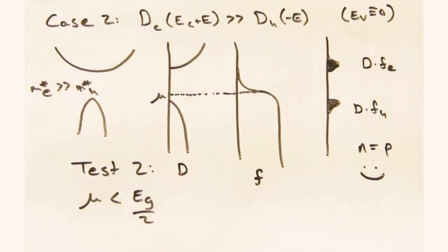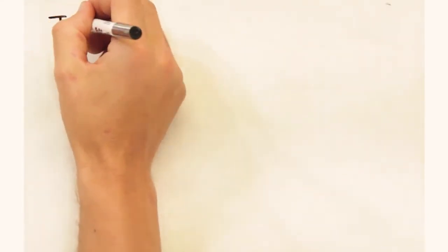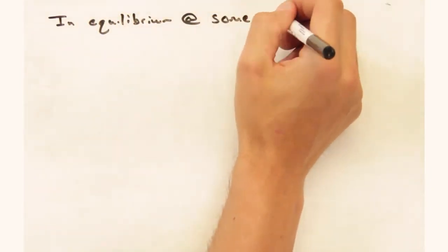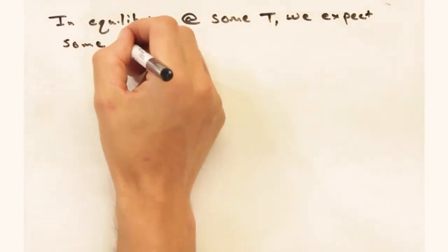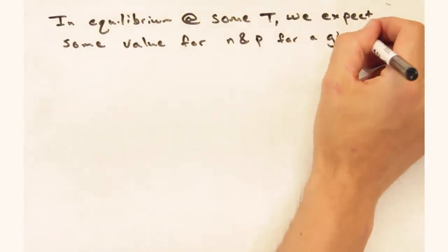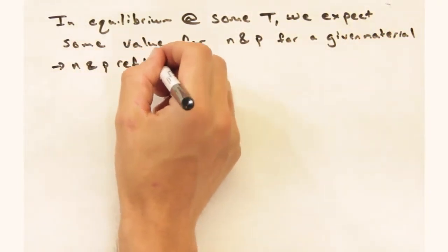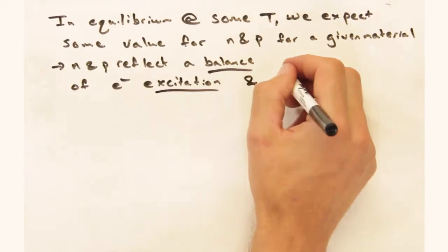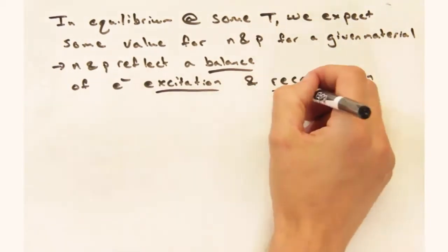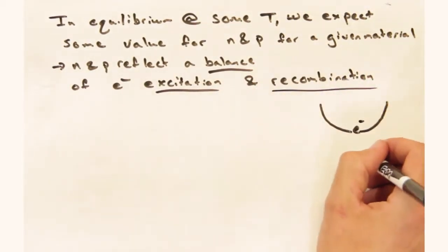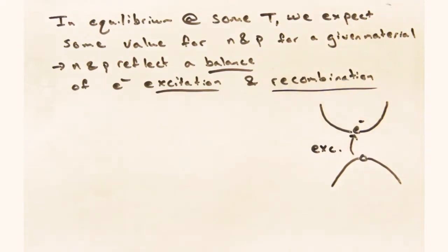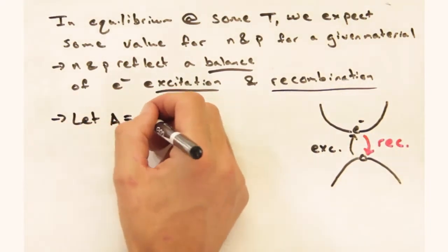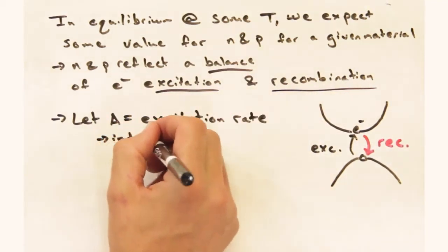So is this all for intrinsic carrier concentration? Almost. There's one final thing we should introduce that will be even more important in extrinsic semiconductors. In equilibrium at some temperature, we expect there's some value for n and p for a given material, right? Sure. It's an equilibrium, and we just figured out what that value is. And we achieve this equilibrium through the balance of excitation of electrons from the surrounding blackbody radiation, and a recombination of electrons with holes.